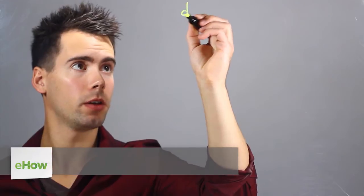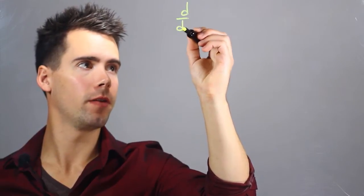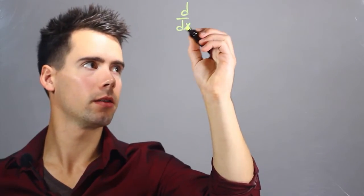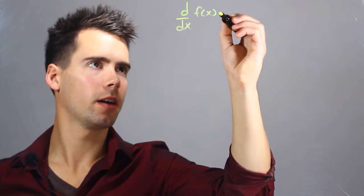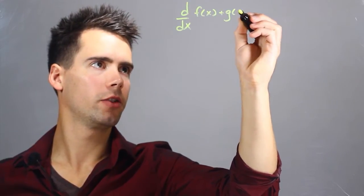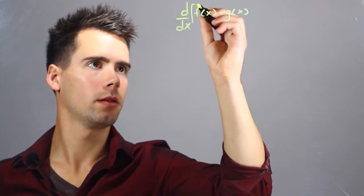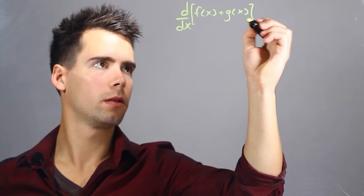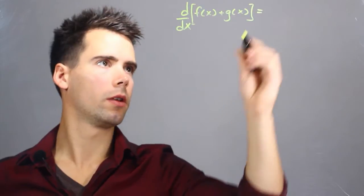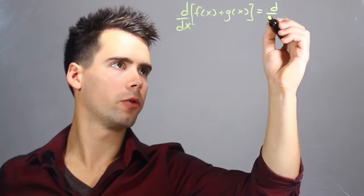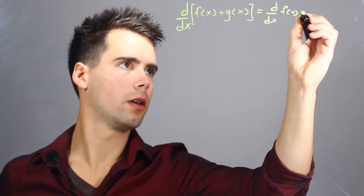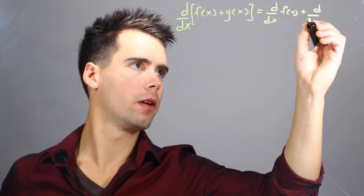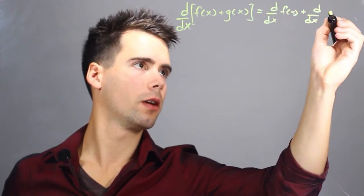Now the sum rule is stated as the derivative with respect to x of some function f of x plus g of x is equal to the derivative with respect to x of f of x plus the derivative with respect to x of g of x.